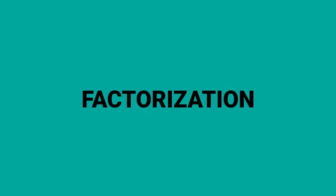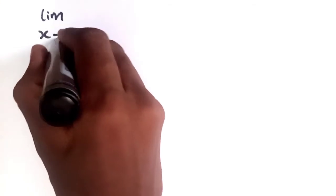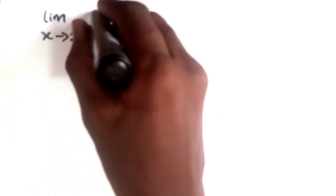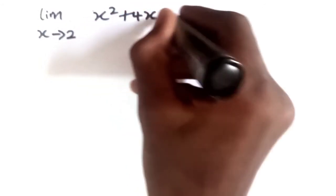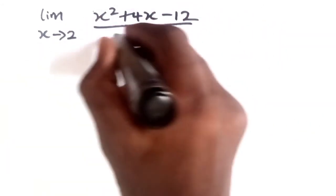Let's have a question: we have limit as x tends to 2 of the function x squared plus 4x minus 12 over x minus 2.